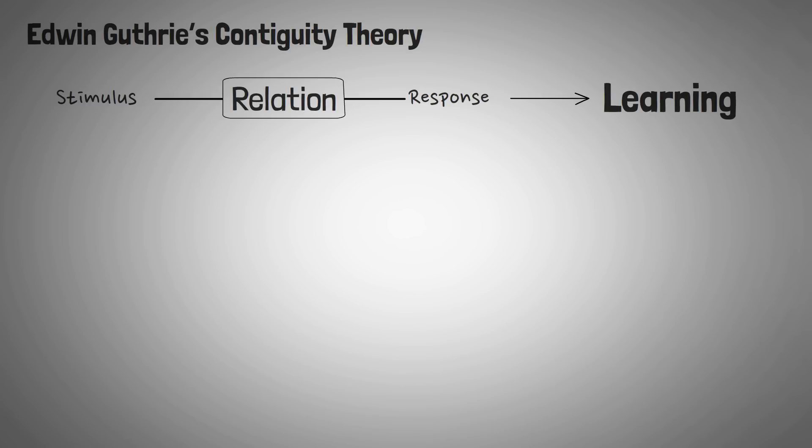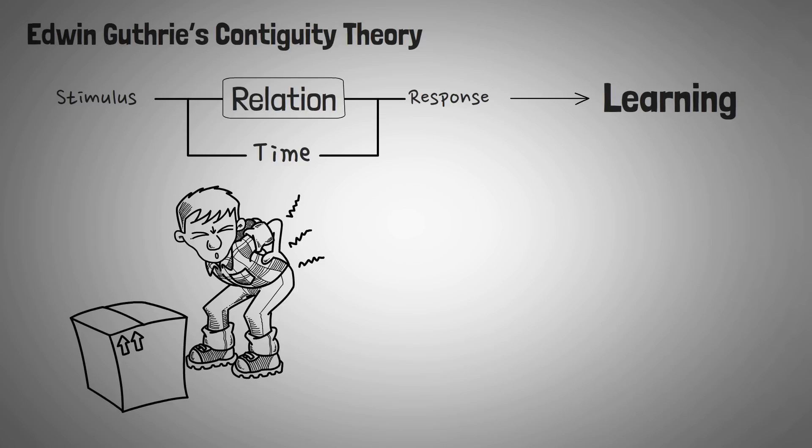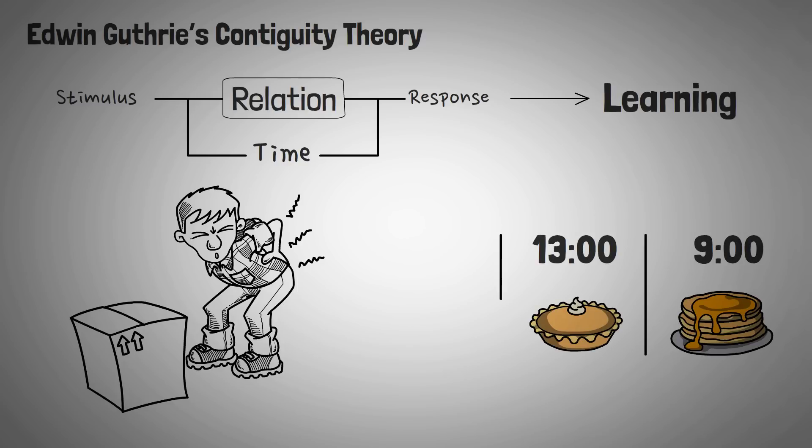The contiguity theory included the law of contiguity, which suggested that time played a factor in the strength between a stimulus and a response. If the response did not occur immediately after the stimulus, the subject would be less likely to associate the stimulus with the response. If you get a stomach ache in the evening, you might associate your body's response with what you ate in the morning, but you are much more likely to associate the response with what you ate for lunch or dinner.